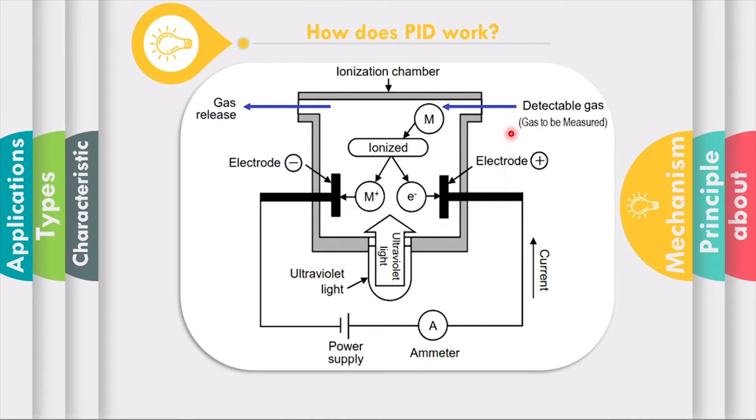First, when the gas enters the ionization chamber, it is exposed to the ultraviolet light from the light source. This then makes the gas to be ionized, generating cations.